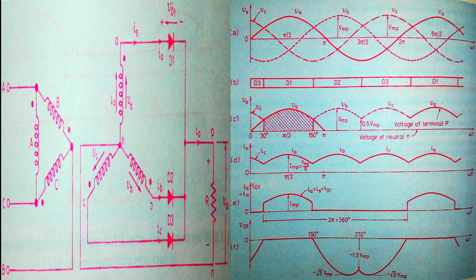Suppose we are at ωt = 90°. At that moment, phase A has the highest positive voltage — VA is greater than VB and VA is greater than VC. I've assumed the neutral is at zero volts. Since VA is the highest positive voltage and neutral is zero, diode D1 will be in forward bias and will be shorted, so point P will be at voltage VA.